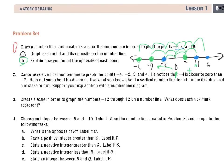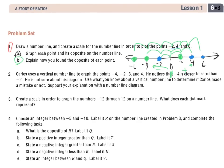So let's move down and we're going to take a look. Now we'll take a look at question 2, just below. Carlos uses a vertical number line to graph the points negative 4, negative 2, 3, and 4. He notices that negative 4 is closer to 0 than negative 2. He is not sure about his diagram. What do you know about the vertical number line to determine if Carlos made a mistake or not? Support your explanation with a number line.